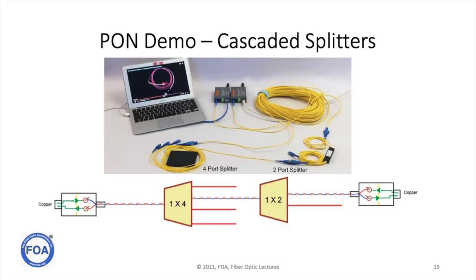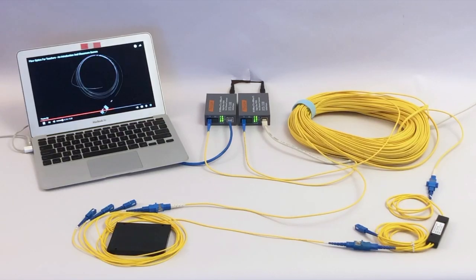Next, let's try a link operating with cascaded splitters. We have a 1x4 splitter and a 1x2 splitter, which gives us a split of 8 times. And as you can see, our link works perfectly well through a split ratio of 8.